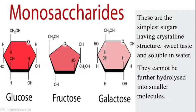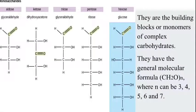Monosaccharides are the building blocks — the monomers — of complex carbohydrates such as disaccharides and polysaccharides. These complex molecules are made up of single monosaccharide units joined together. So monosaccharides are the individual units used to build those larger carbohydrate molecules.